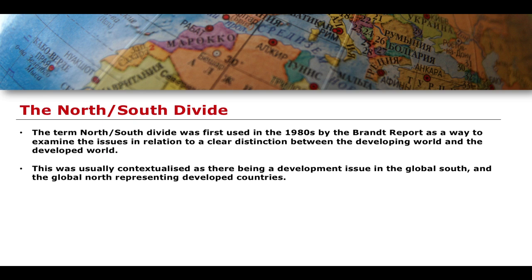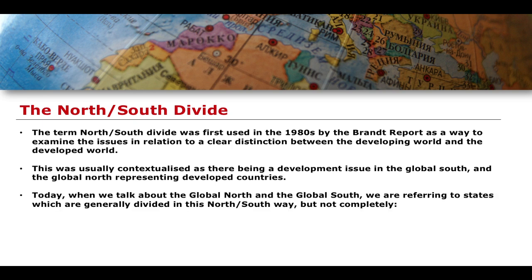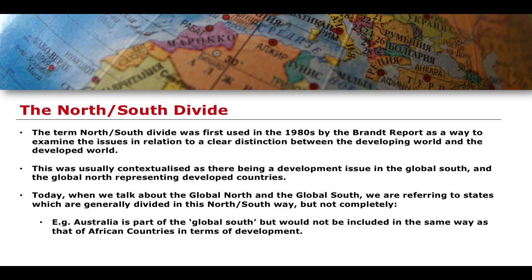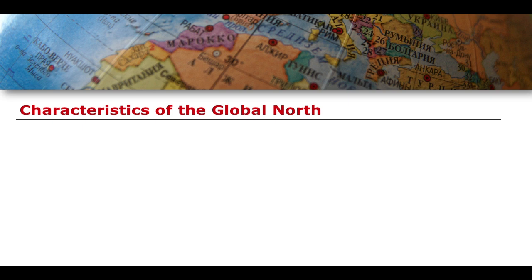Of course, it's not perfect, because you would include in developed countries states like New Zealand and Australia, and potentially even South Africa to a lesser extent, which are obviously countries that exist very much in the global South geographically. But generally, the idea is that there is this geographic divide on Earth, and Australia is one of those outliers that we don't include in the global South despite its geography. Even though there are exceptions, we still maintain this kind of division in international relations and international law.